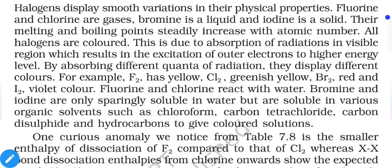Halogens display a smooth variation in physical properties: fluorine and chlorine are gases, bromine is a liquid, and iodine is a solid. Melting and boiling points steadily increase with atomic number. By absorbing different quanta of radiation in the visible region, they display different colors — F₂ is yellow, Cl₂ is greenish-yellow, Br₂ is red, and I₂ is violet. Fluorine and chlorine react with water, while bromine and iodine are sparingly soluble in water but dissolve in organic solvents such as chloroform, carbon tetrachloride, carbon disulfide, and hydrocarbons to give colored solutions.